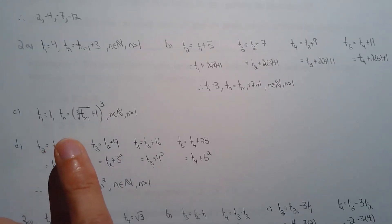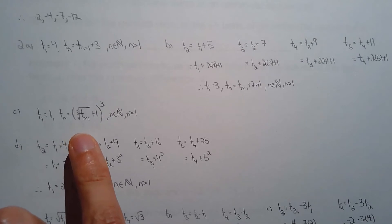For c you cube root the previous term. You take the cube root and then you add by 1 and then you cube that result. You cube that sum and that will give you the next term.